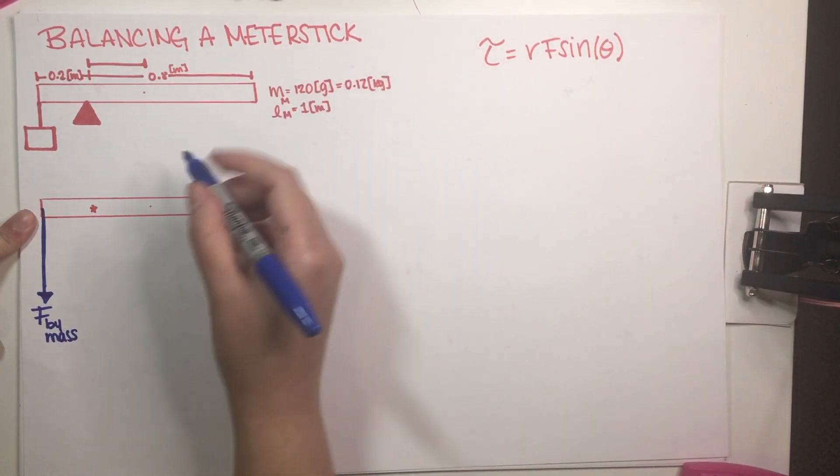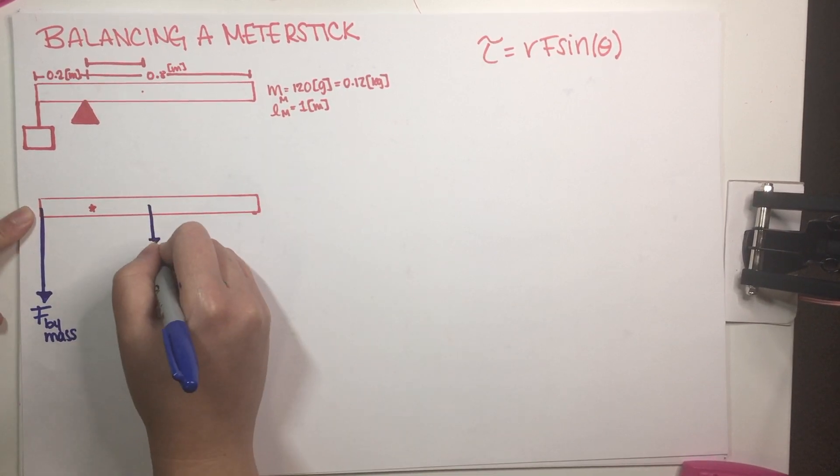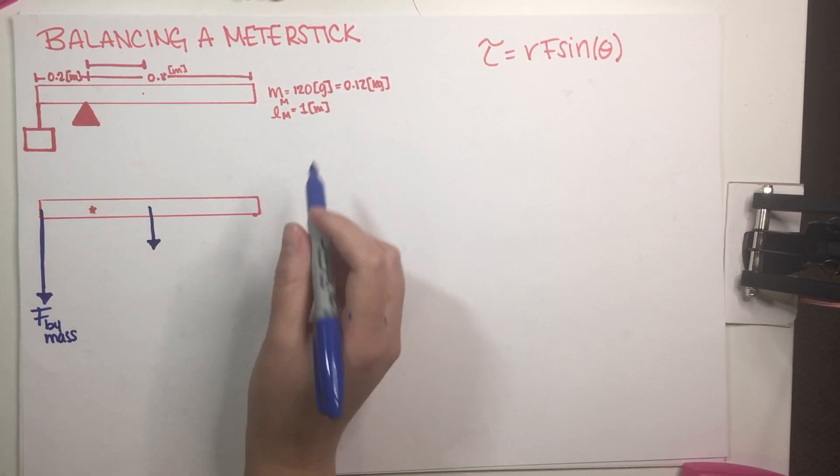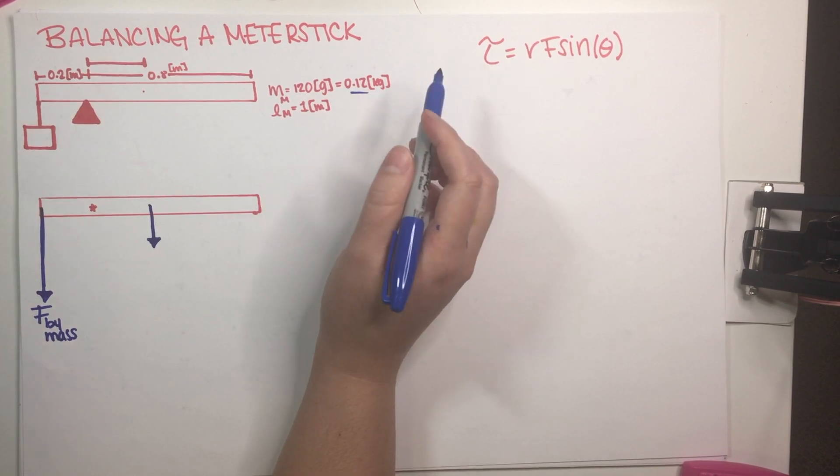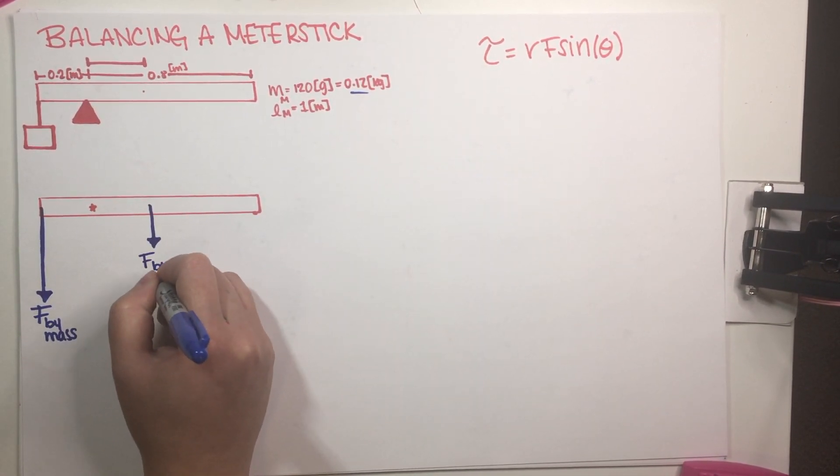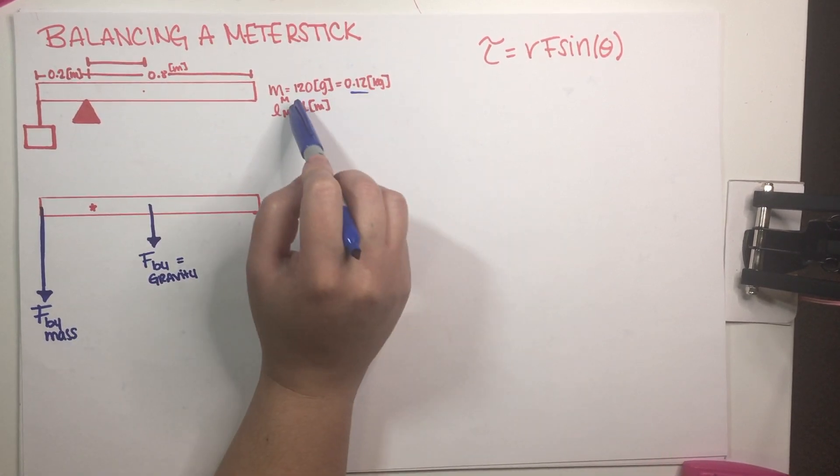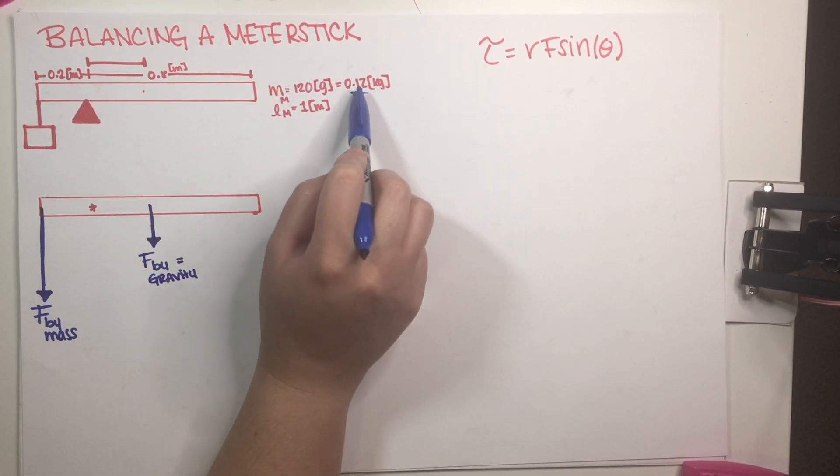Now, we do have another force exactly here at the middle. And that is because this meter stick, it has some weight to it. So because it has some weight to it, gravity is acting on it. So force by gravity.